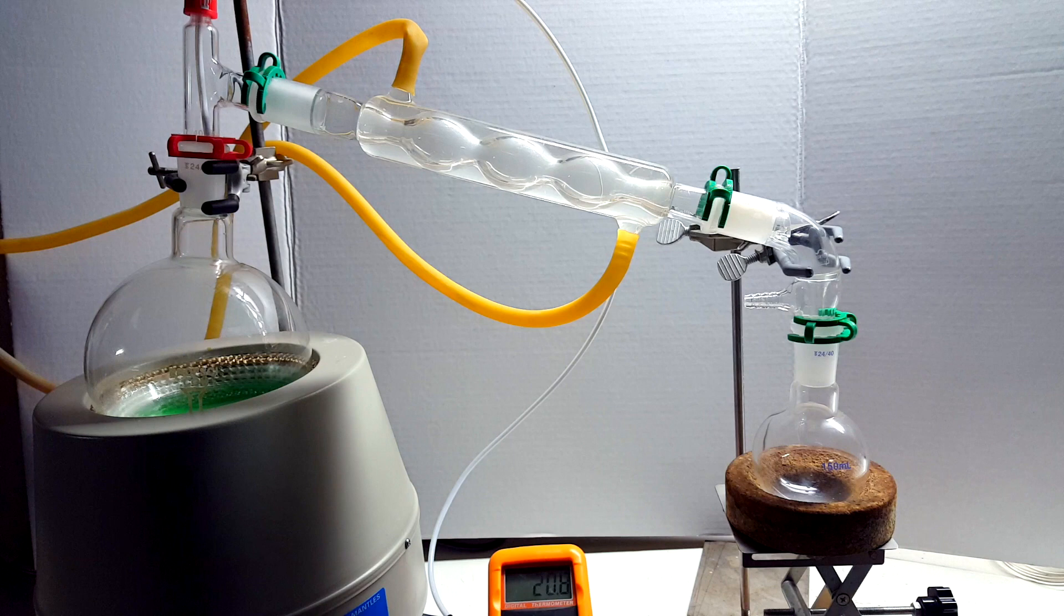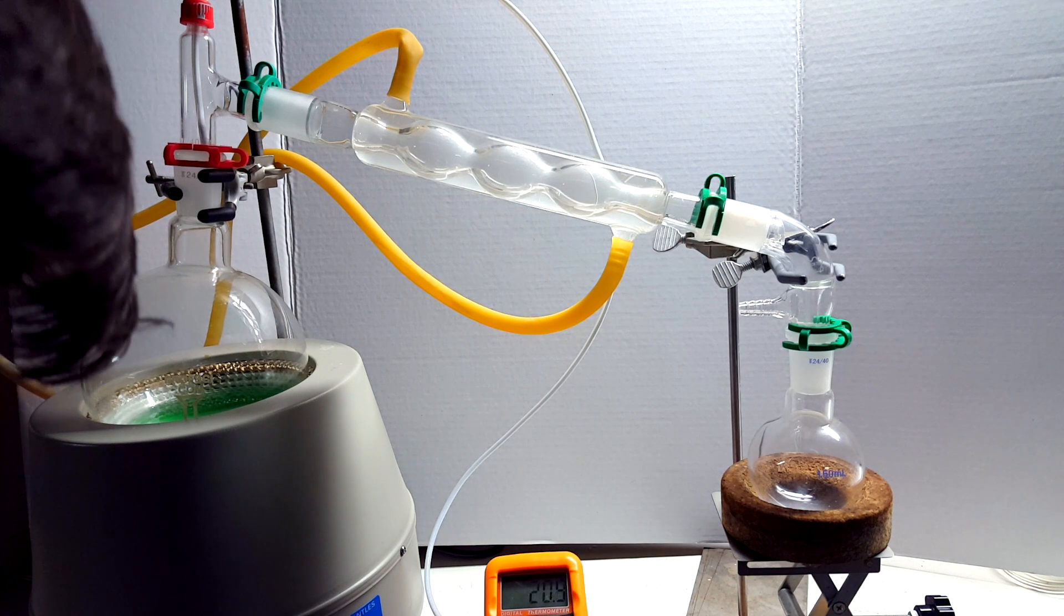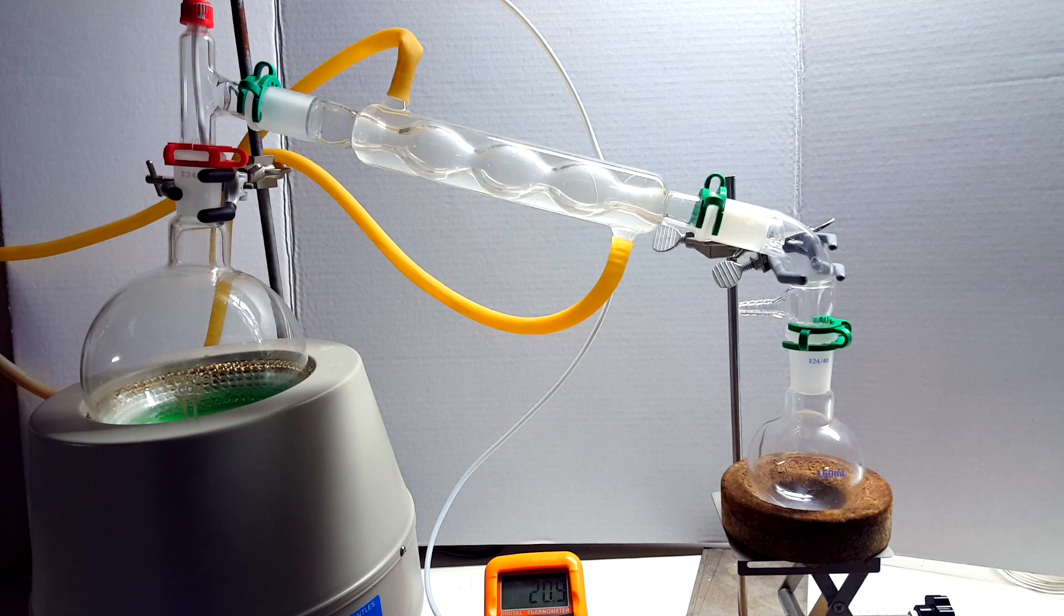Again, I set up for a simple distillation. In this case, I opted to use a bubble condenser instead of the typical Liebig condenser. The bubble condenser has a more efficient cooling of vapor from the increased surface area of the bubbles. To get things started, I turned on the heat and just stepped away.